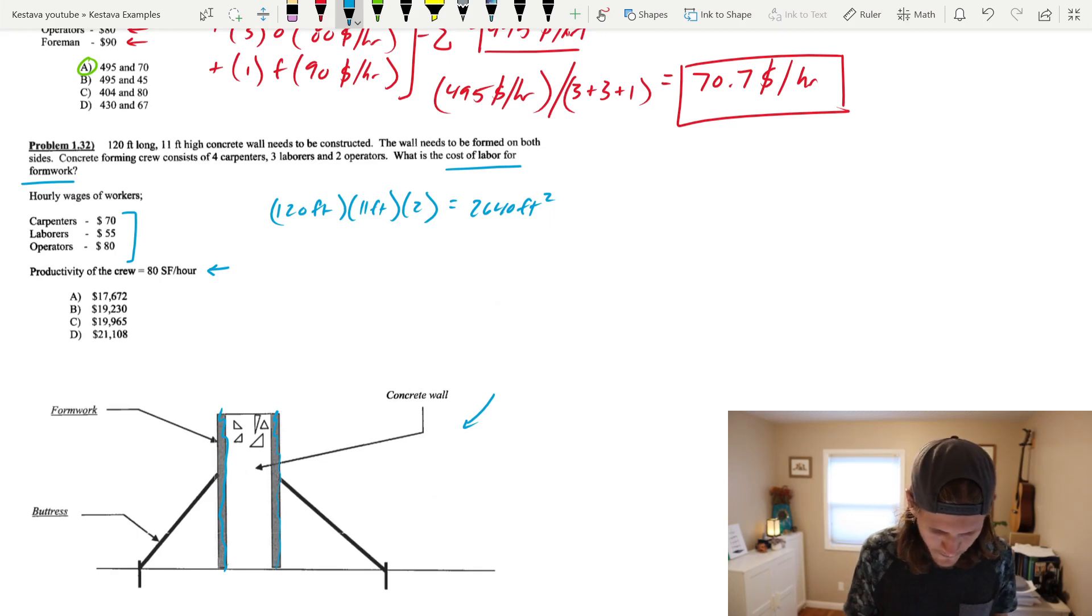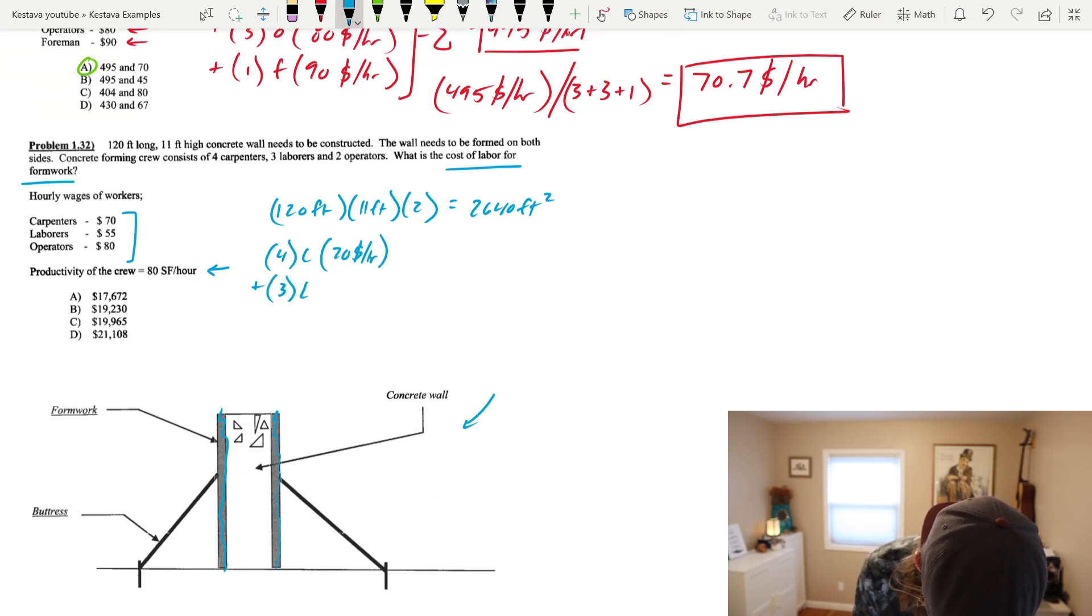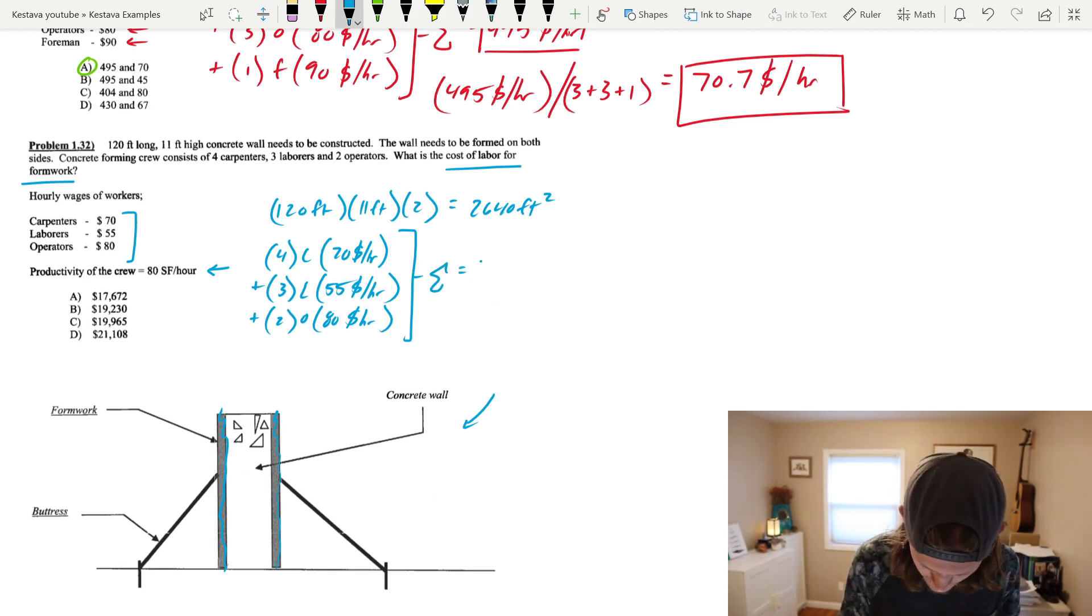Now, what I want to do is figure out, well, how much does it cost cumulative per hour for this crew to work? And kind of like what we did above, we need to say, we have four carpenters, so 4C, times $70 an hour, plus we have three laborers, so 3L, times $55 an hour, plus two operators, O, at $80 an hour. Well, they stayed consistent with the pricing, at least operators are both $80. That added together, so summation, equals $605 for this crew per hour.